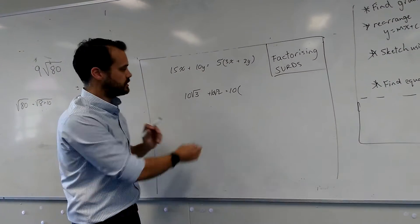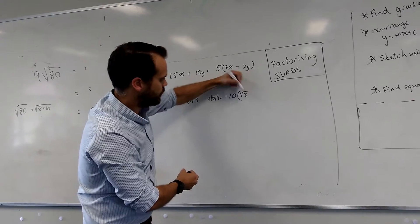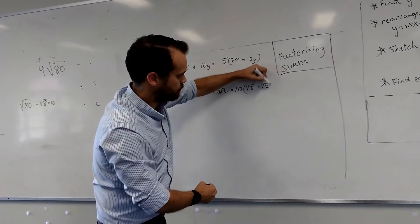10 can come outside of the brackets. 10 times something makes root 3, and 10 times something makes 10 root 2, root 2.